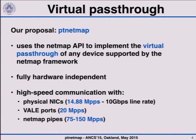The targets are line rate for physical adapters, 20 million packets per second for Vale ports, and very high numbers for NetMap pipes, which only exchange packets and never touch the buffers that are exchanged, so they can be very fast. But of course, as soon as the application starts doing real things on the packets, those numbers drop dramatically.